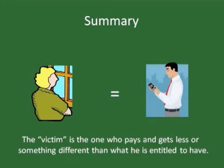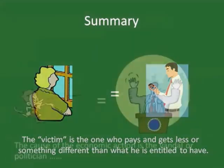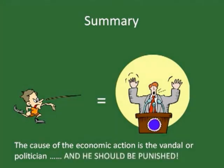The next player is the victim — the baker, or in our world, the taxpayer. He has to sacrifice what he would have desired for something else. Lastly, we have the causing action: the vandal, or politician, who oftentimes is in cahoots with the glazier. The politician gets to direct the flow of spending, and usually receives political rewards when he should be receiving political punishment.